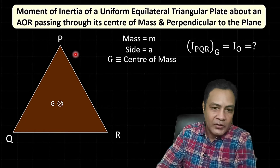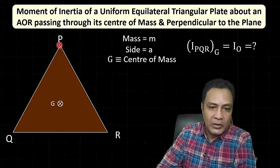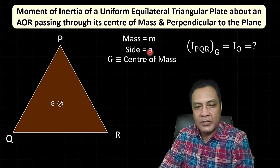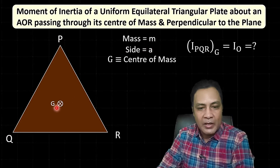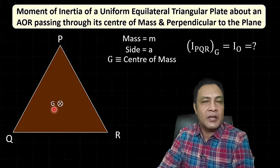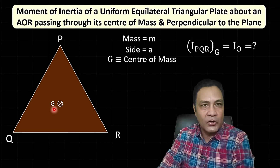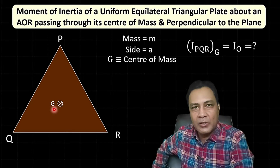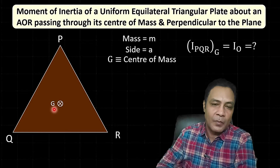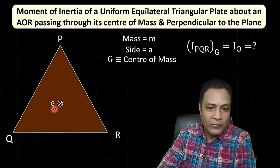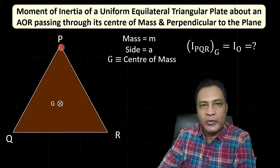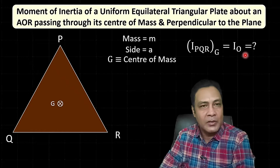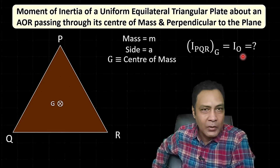Here I have an equilateral triangular plate PQR. Its mass is M, its side is A, and G is the axis of rotation that passes through its center of mass and perpendicular to its plane. We have to find its moment of inertia, which I'll call I₀.